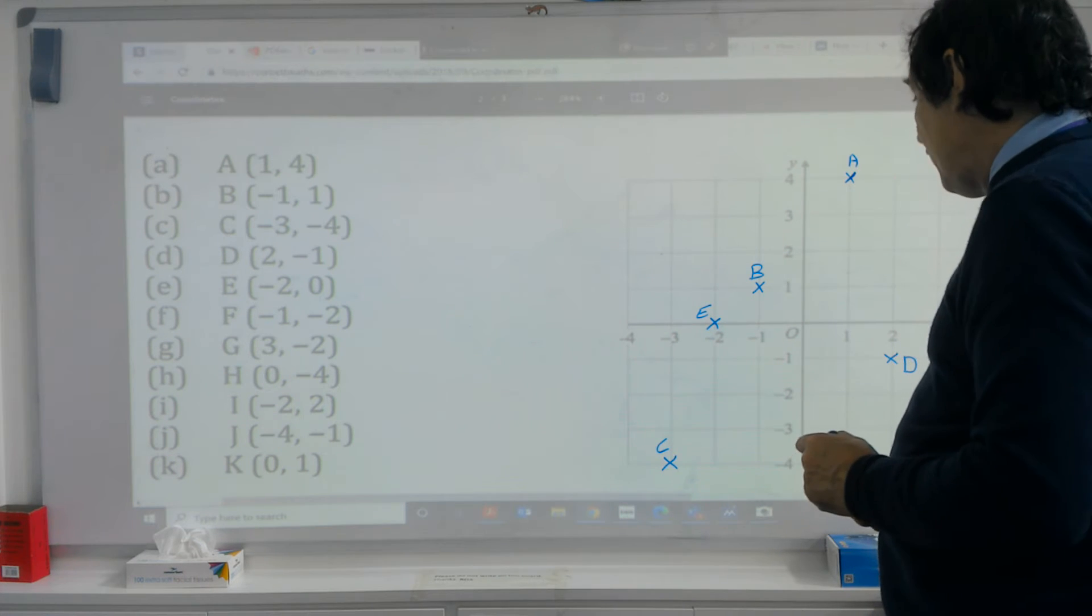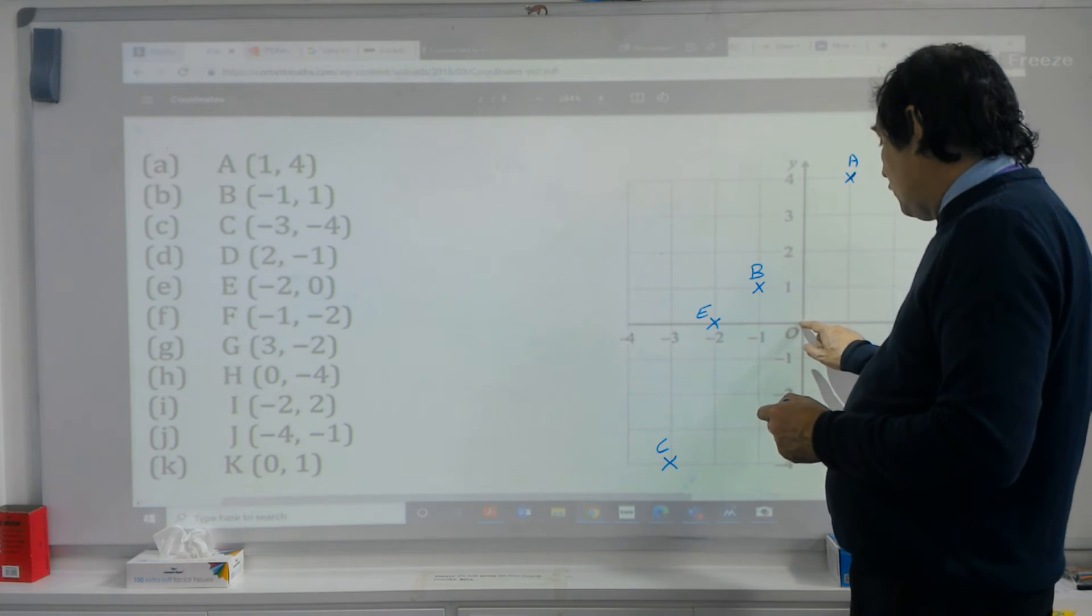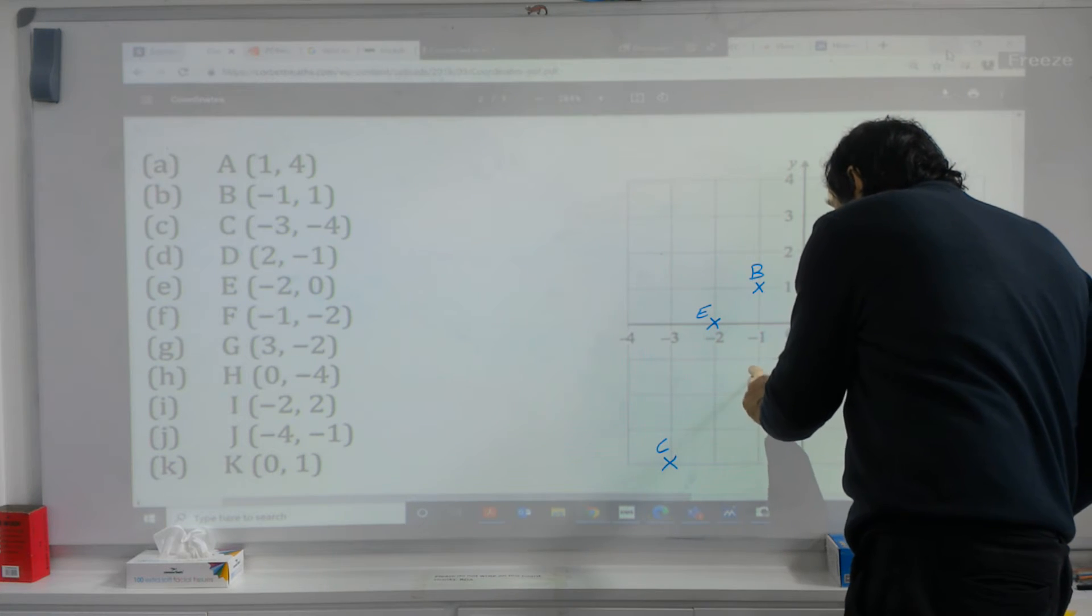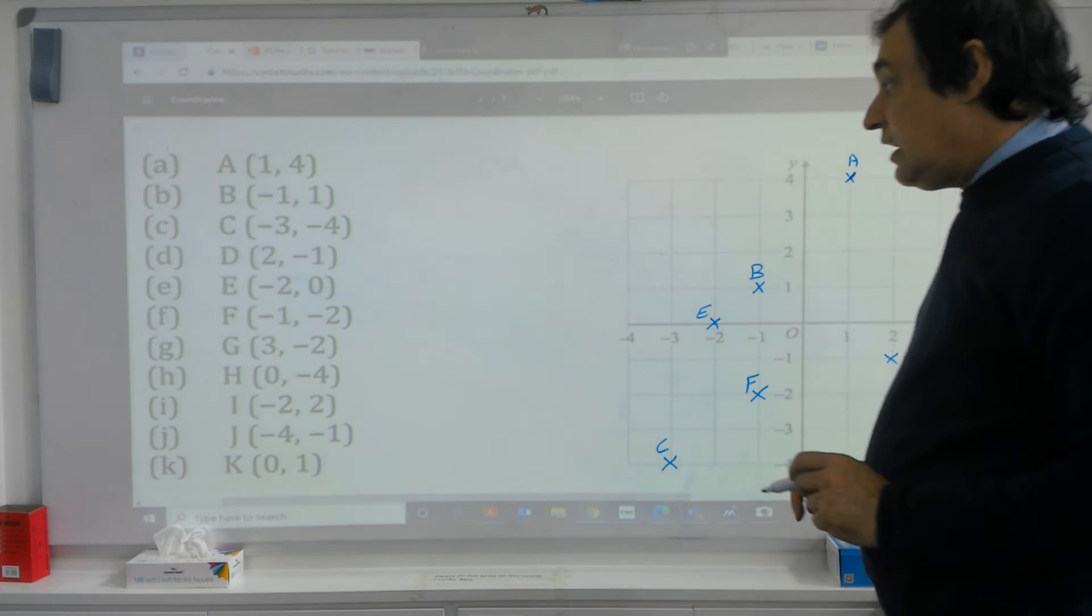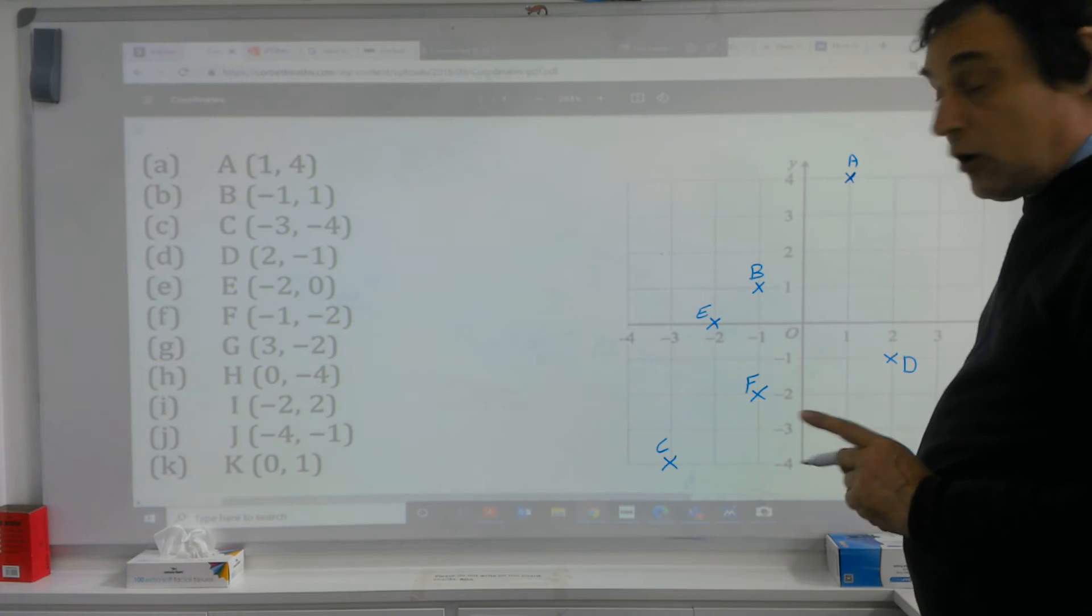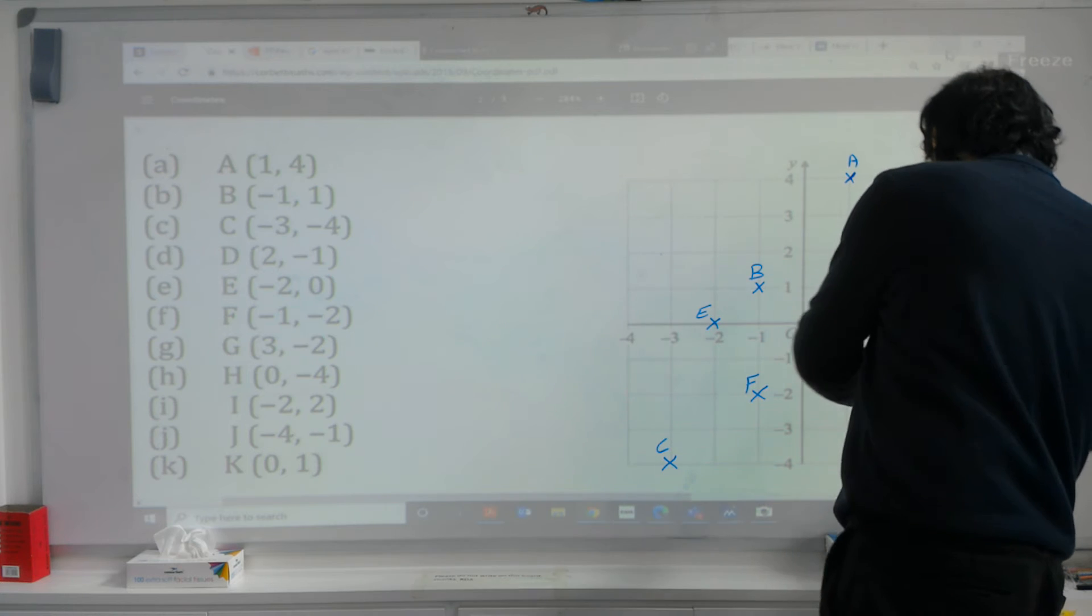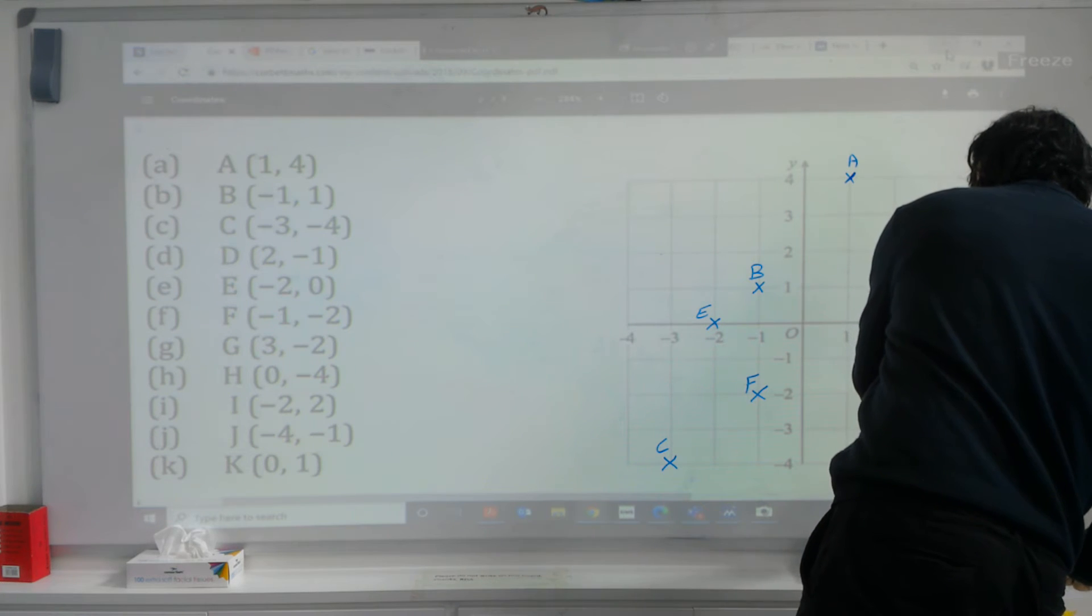Keep going. F minus one minus two, so minus one and two down gives us F. G is three along and two down. So three minus two, that will give us G.